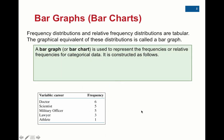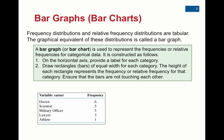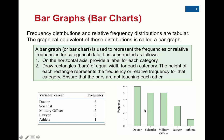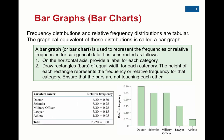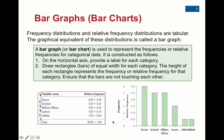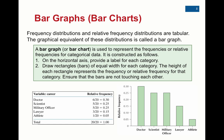Now, from these tables — a frequency table or a relative frequency table — we can create a bar graph. On the horizontal axis you put each category: doctor, scientist, military officer, lawyer, and athlete. The vertical axis is the frequency. The higher the bar, the more people want that career, so doctor is the most popular while athlete is the least popular. We can also use the relative frequency table to create a bar graph — it's the same shape, but instead of frequency on the vertical axis, we have relative frequency: 30%, 25%, 20%, 15%, and so on. It's the same graph with just a different unit on the vertical axis.